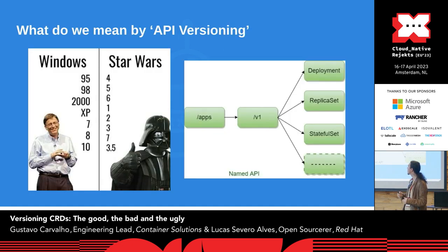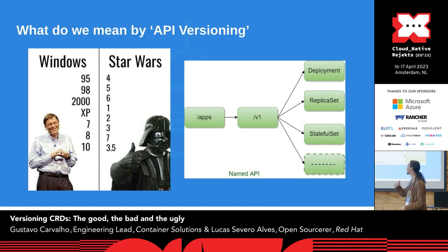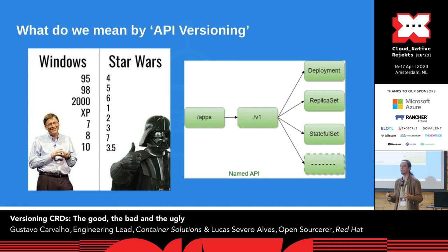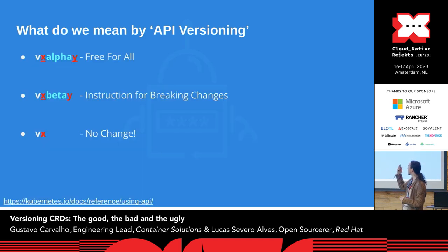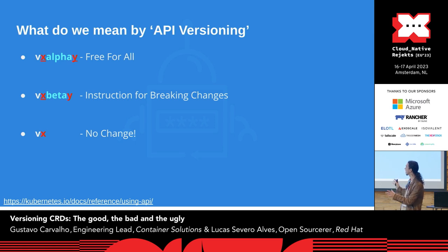What we mean by API versioning: versioning in general is a pretty controversial topic. For us, we're focusing not on software versioning like Kubernetes 1.26 or 1.27, but on API versioning — internal API versioning. If you've applied custom resources or even Kubernetes resources, you're probably familiar with the standard: V1 alpha 1, V1 beta 1, and so on.